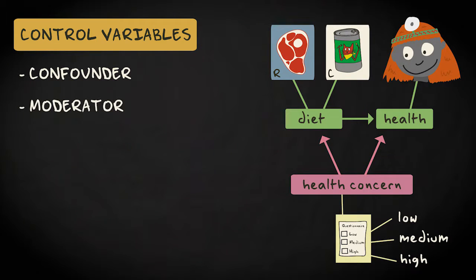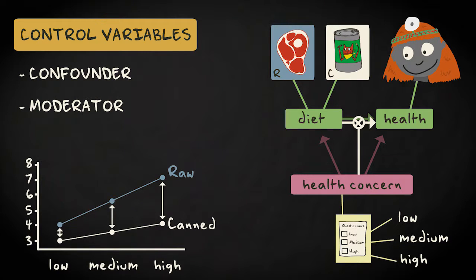Secondly, health concern can moderate the relation between diet and health, meaning the relation becomes weaker or stronger depending on the level of health concern. For example, a raw meat diet is indeed healthier, but more so when the owner is more concerned with health. For example, because more concerned owners make sure the cat eats the right proportions, which makes the health benefits of raw meat more effective.